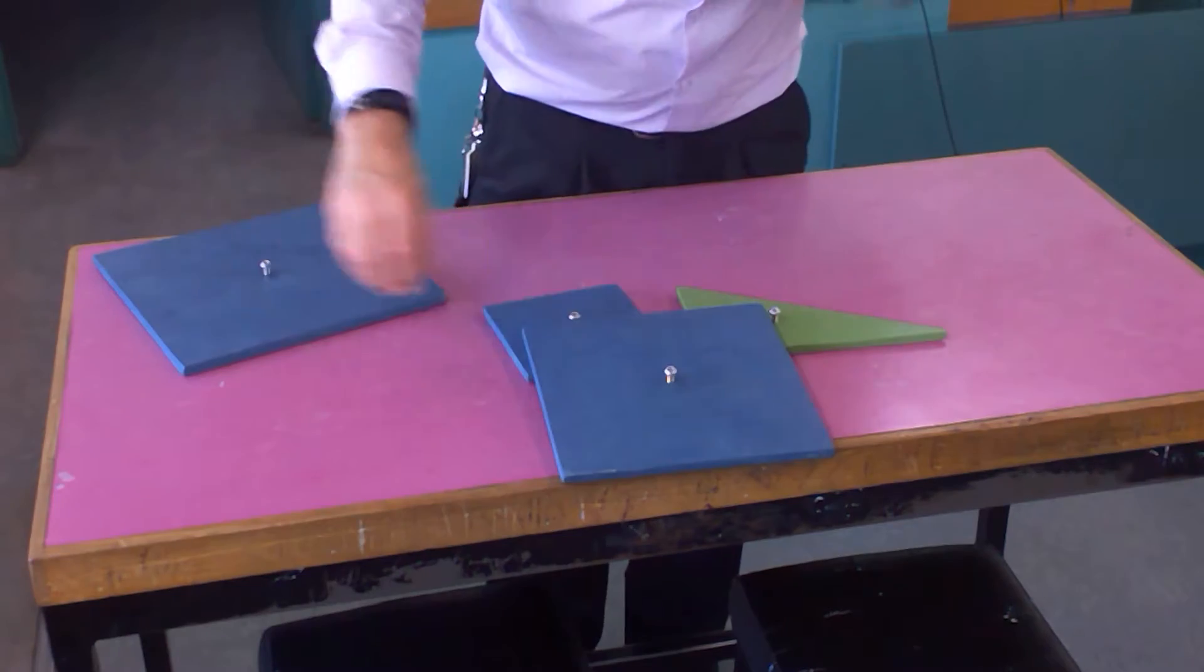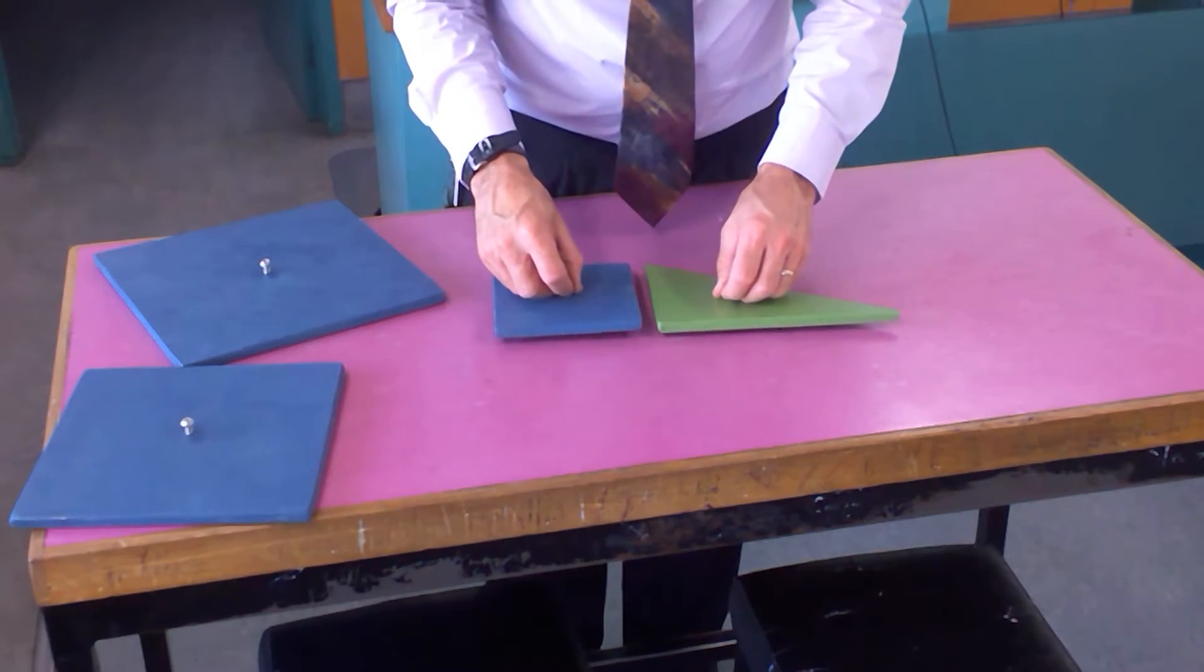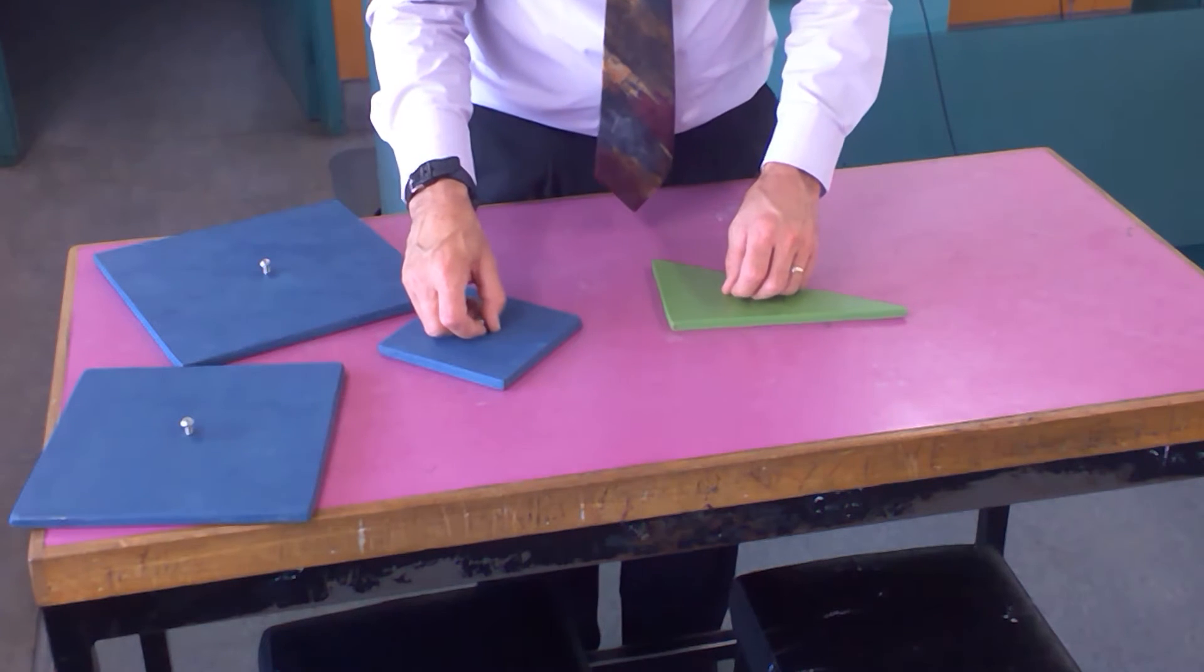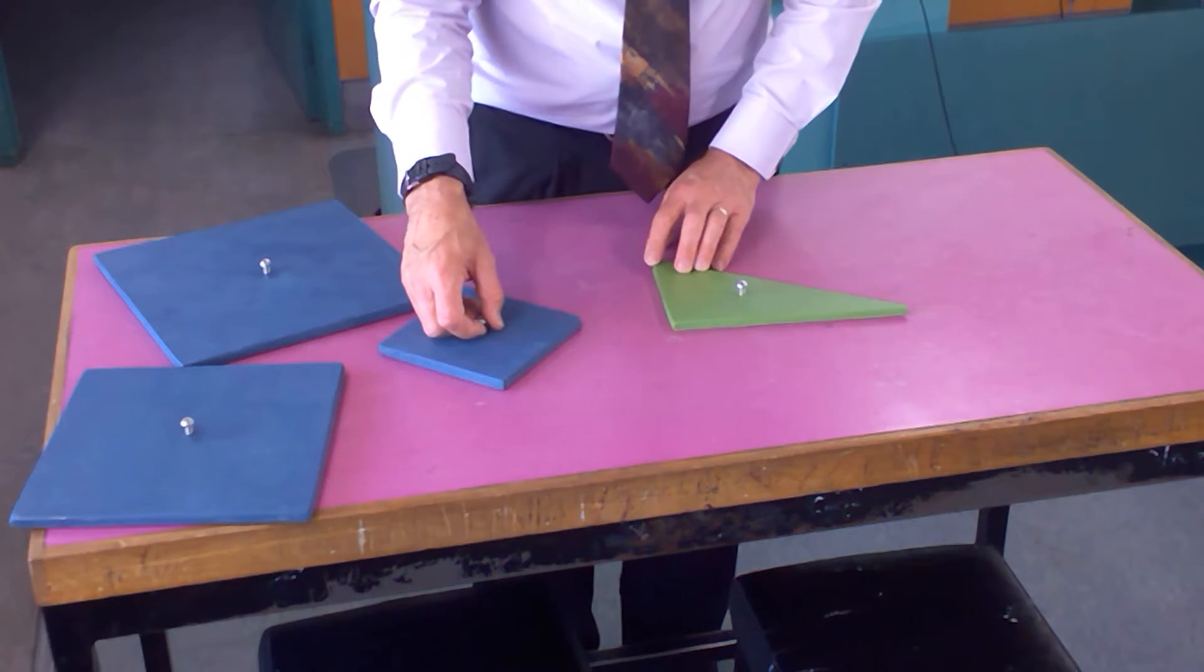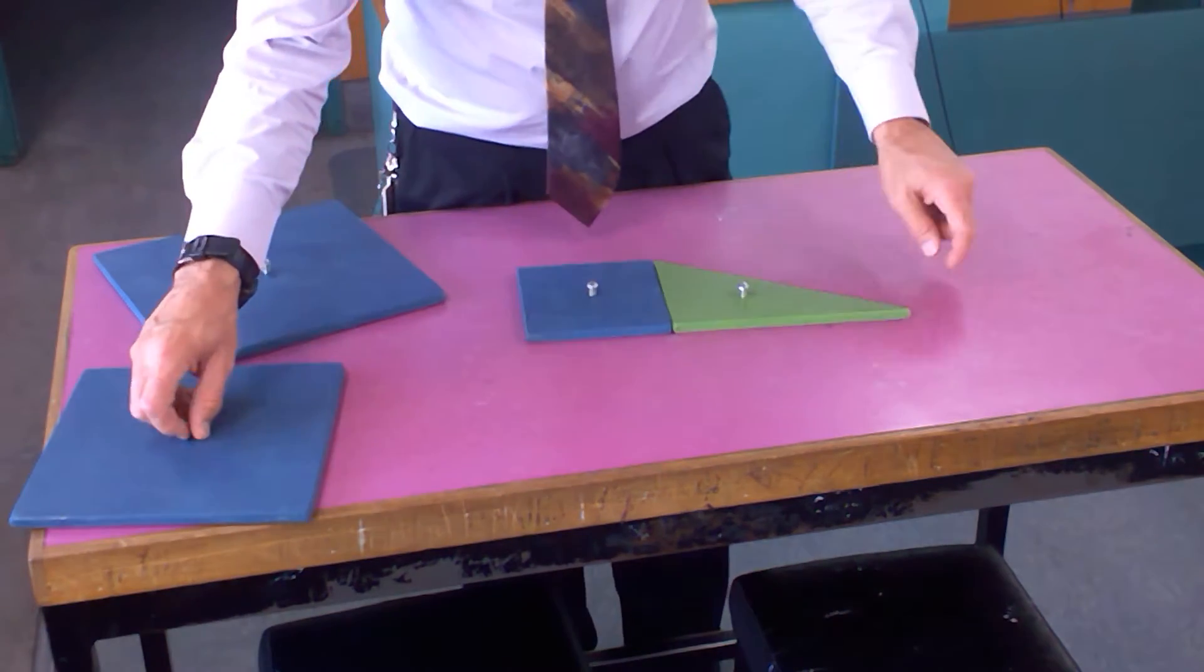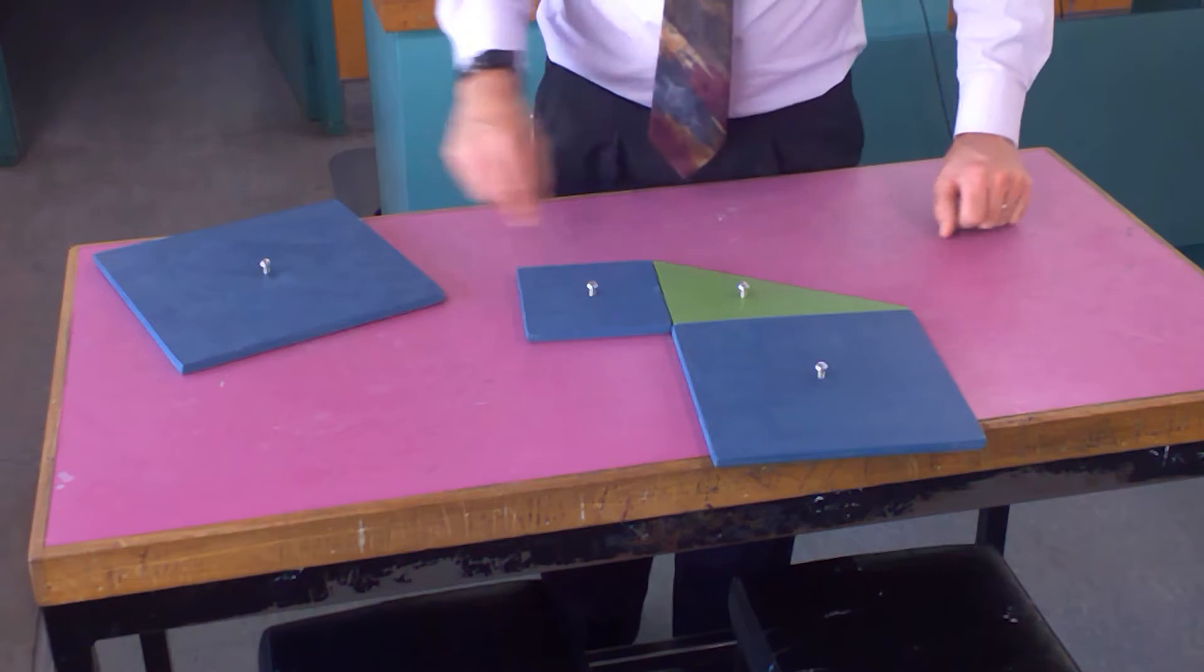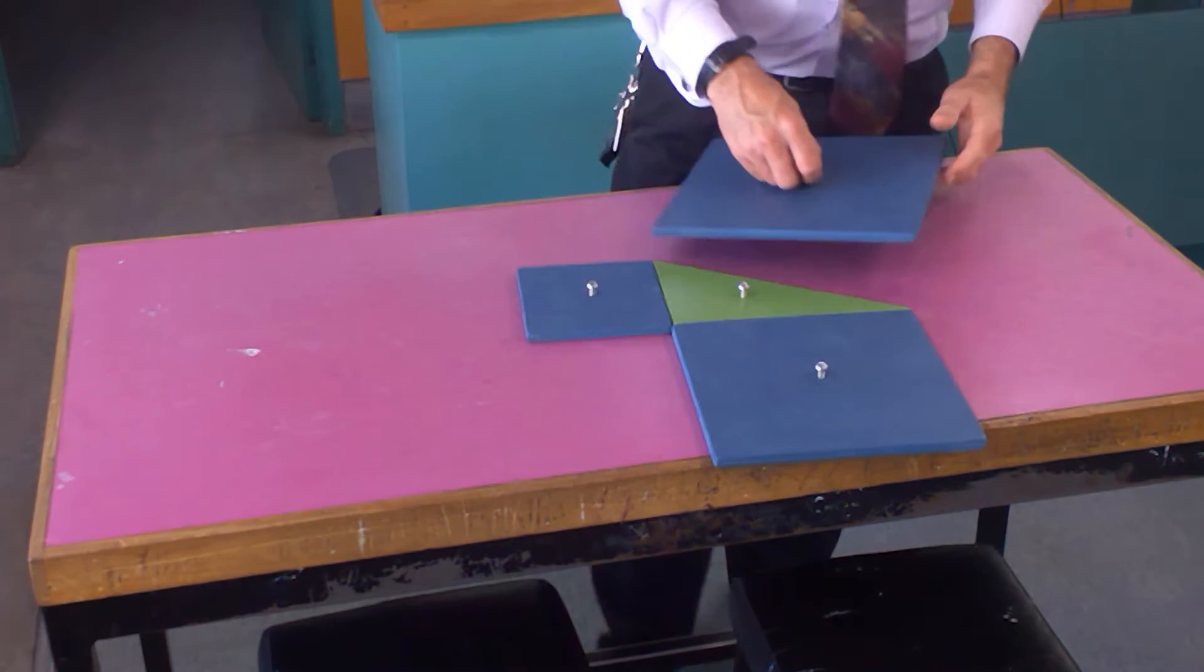Kia ora, hello. One of the things we spend a lot of time on in physics is the Pythagorean theorem, which says that the square on this side plus the square on this side will add up to be the square on this side.